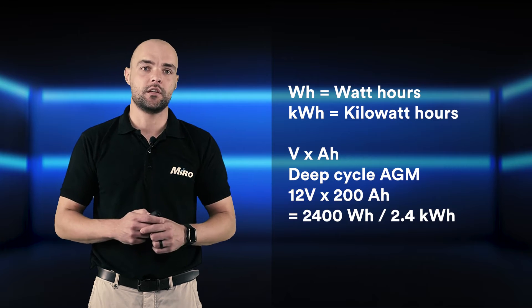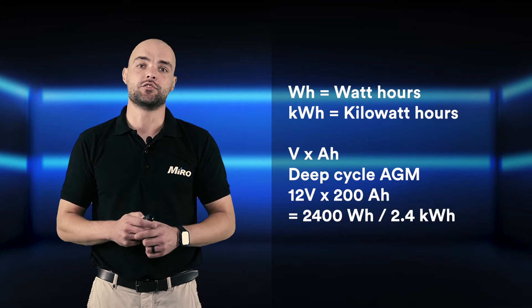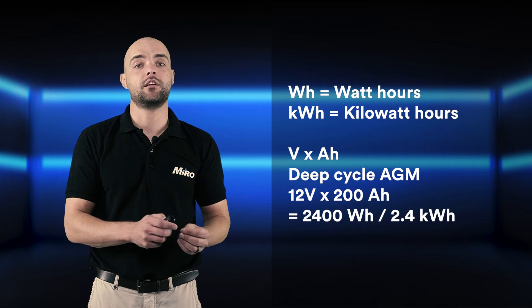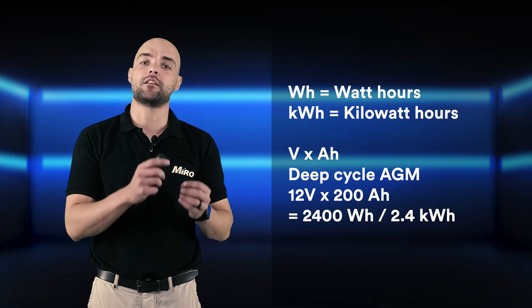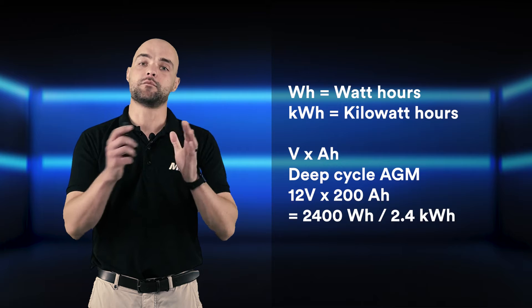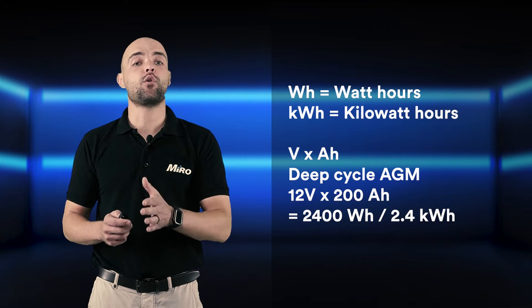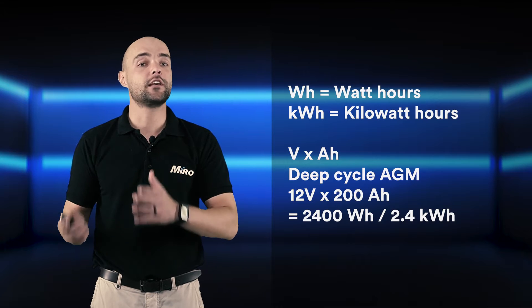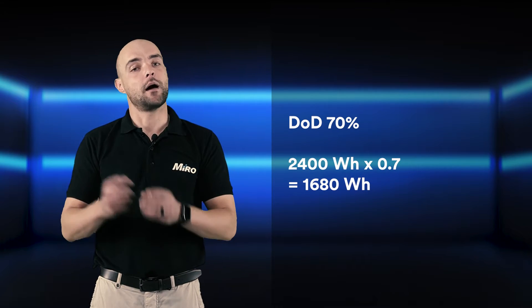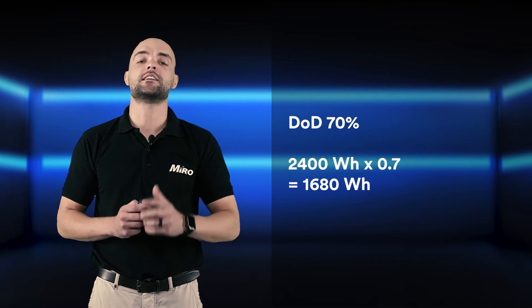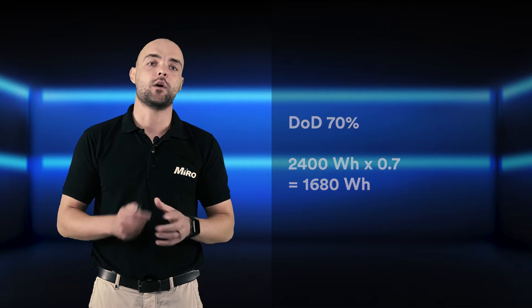There is another way to express or calculate the usable energy capacity, expressed in watt hours or kilowatt hours. To calculate the watt hours of your battery solution, you simply multiply the voltage of the battery by the amp hour rating. For example, our 12 volt 200 amp hour deep cycle AGM battery gives you 2400 watt hours or 2.4 kilowatt hours capacity. Keep in mind that the 70% DoD limit applies, so 2400 watt hours times 0.7 equates to 1680 watt hours of usable capacity.